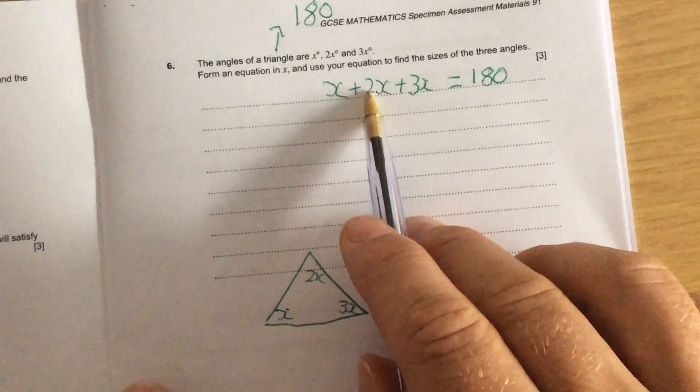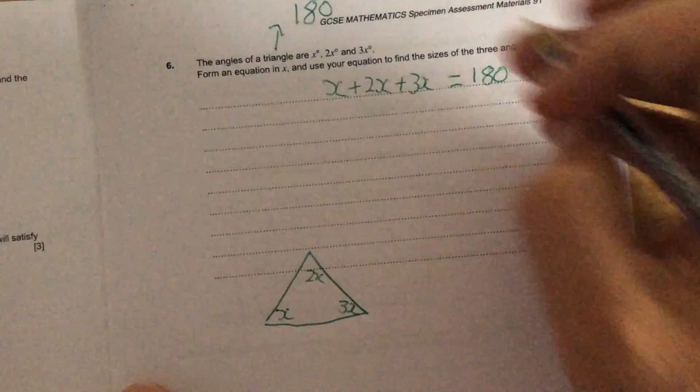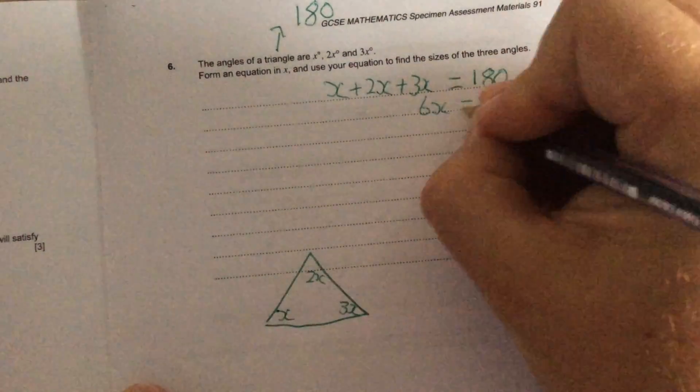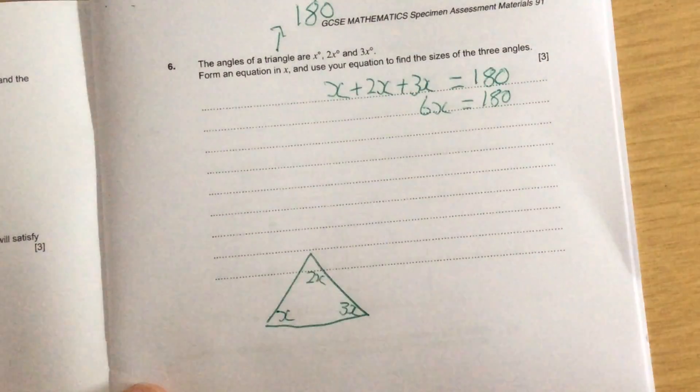So 1x add 2x is 3x. Add 3x is 6x. So 6x is equal to 180.